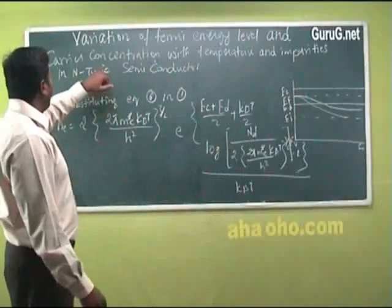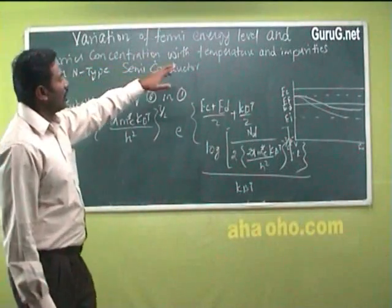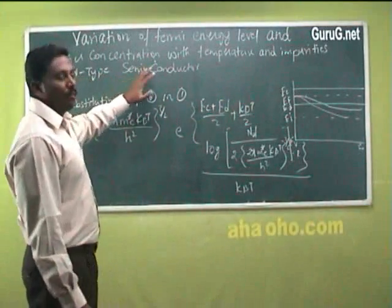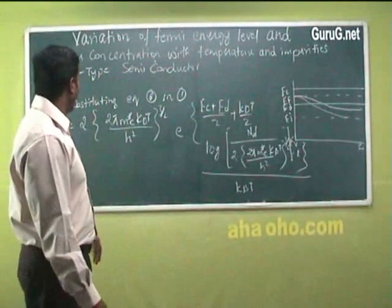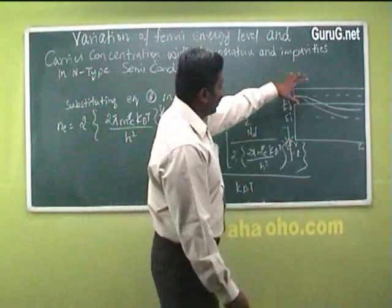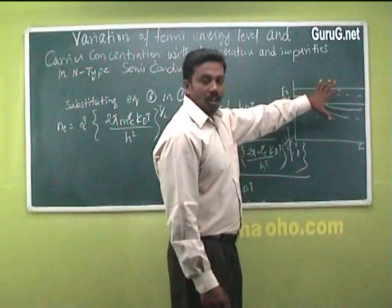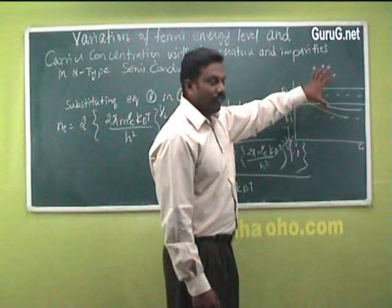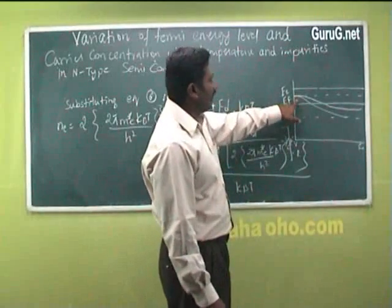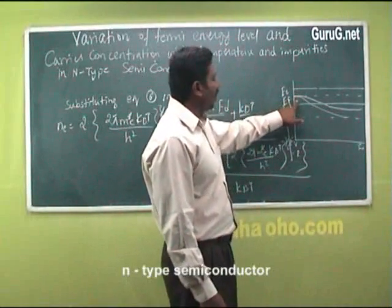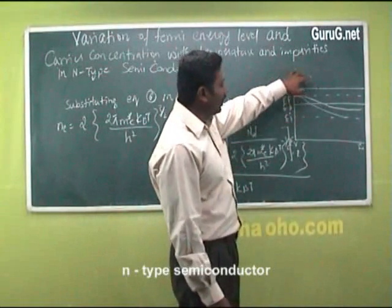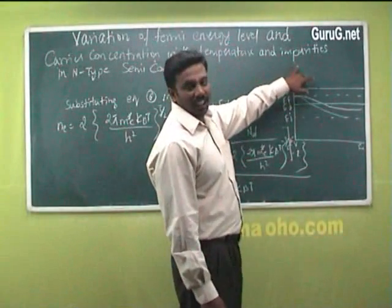Variation of Fermi energy level and carrier concentration with temperature and impurities in n-type semiconductors. If you see the energy structure — the band structure of an n-type semiconductor — we can see that at 0 Kelvin, the Fermi energy level lies exactly between the donor energy level and the conduction band.